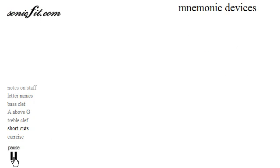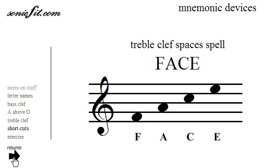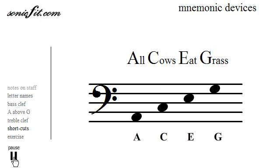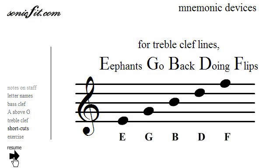Here are some mnemonic devices. The spaces of the treble clef spell FACE — F-A-C-E. The spaces of the bass clef spell ACEG, or you might prefer "All Cows Eat Grass." For the treble clef lines, you might know one of many mnemonic devices. "Elephants Go Back Doing Flips" is my favorite. The one I grew up with was "Every Good Boy Does Fine."